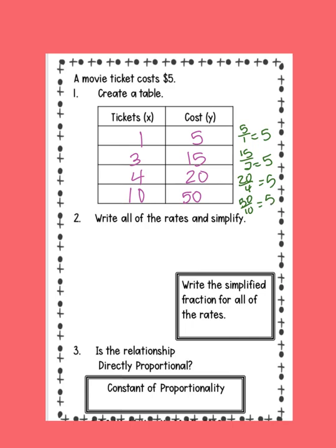So write the simplified fraction for all the rates. They all equal 5. So is this relationship directly proportional? Yes, because it's $5 for one ticket. So the constant of proportionality, K, is equal to 5.